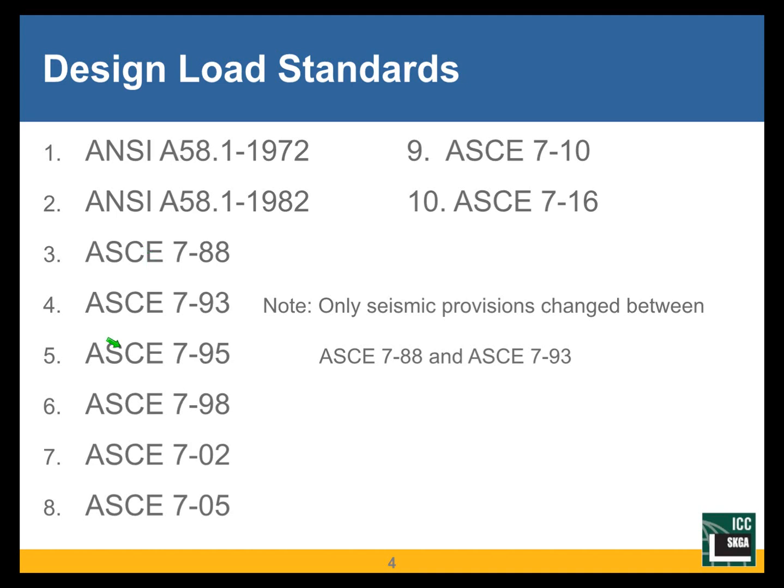Then ASCE 7-95 — huge changes in wind design provisions. From 72 to 82 there were changes, 82 to 88 minor changes if any. 1995 was the first time there were big changes in what was started in 1972. Then the 98 edition, 02 edition, 05 edition. ASCE started three-year, or tried three-year updates for a while, although 98 to 02 was four years. And then they decided to abandon that and go for a six-year cycle.